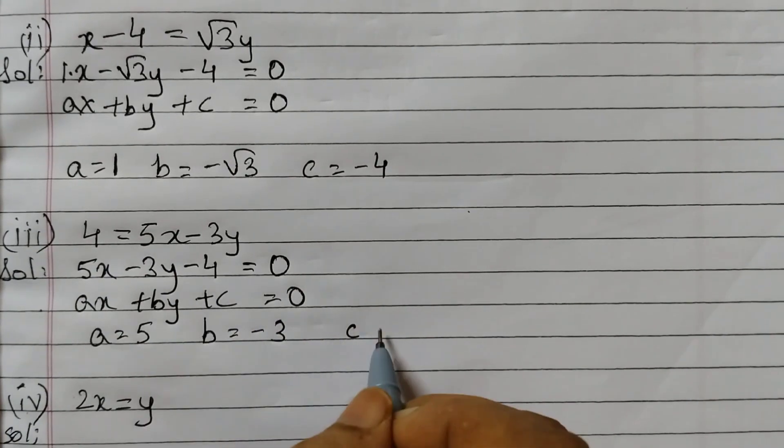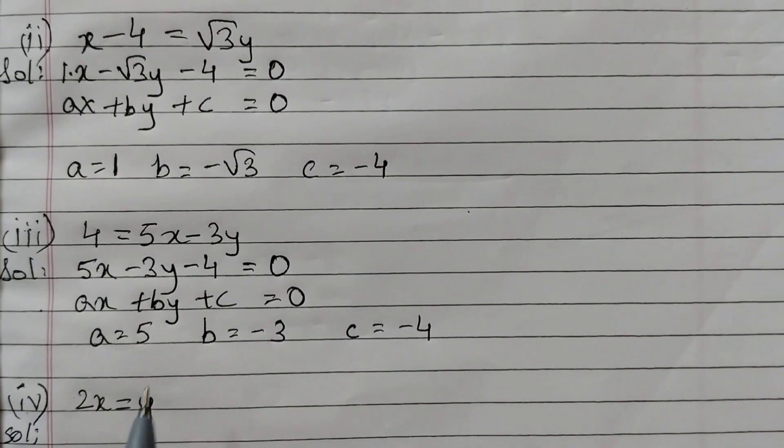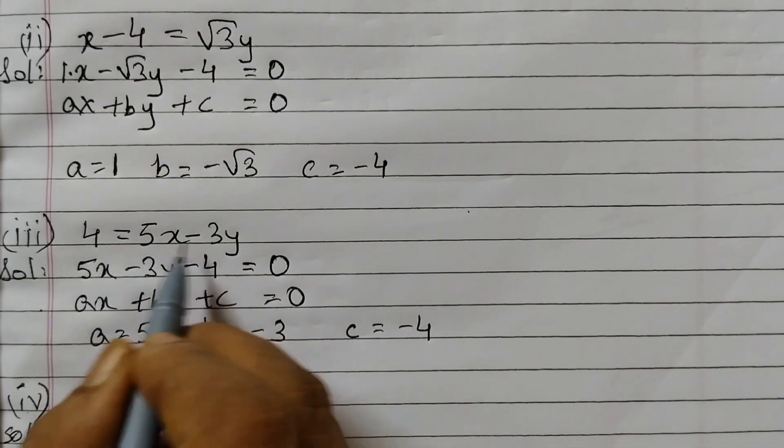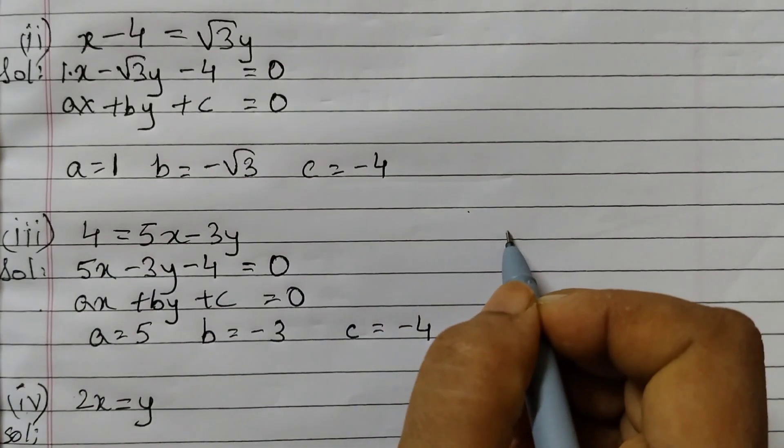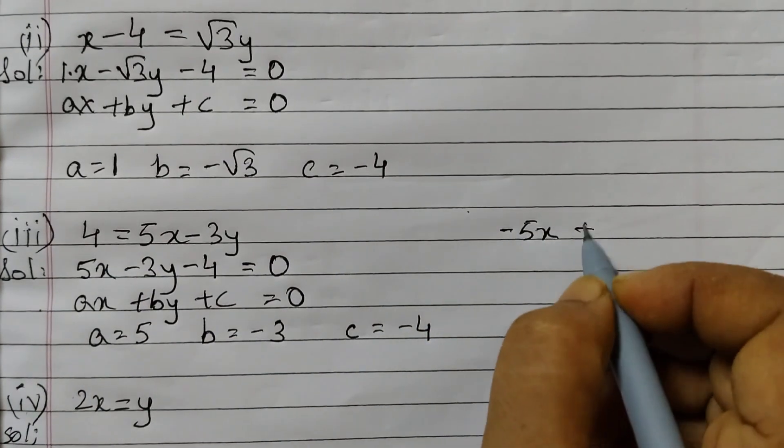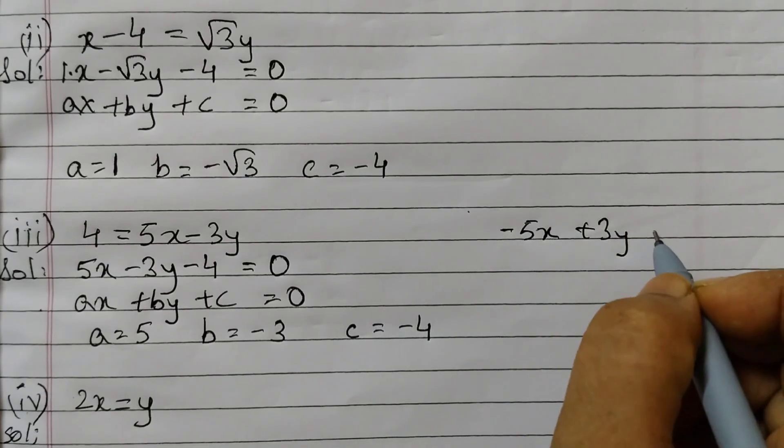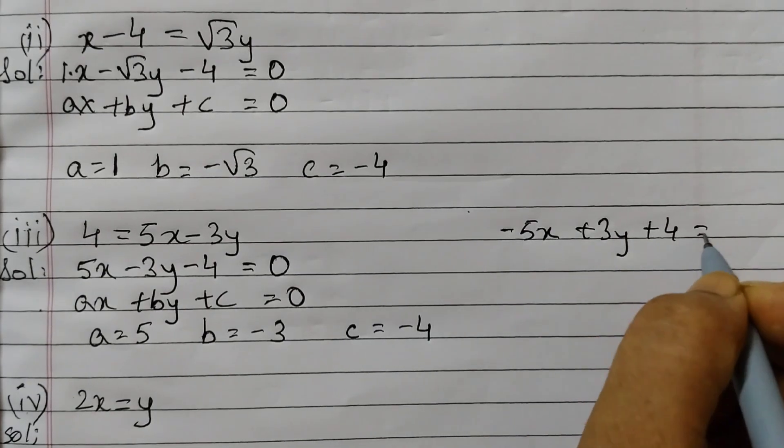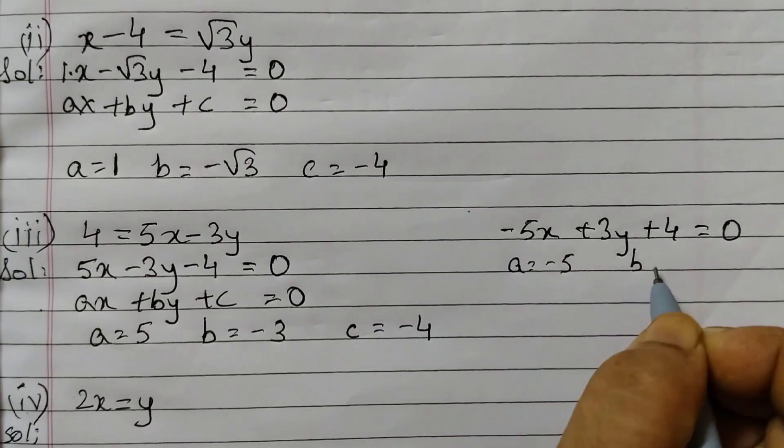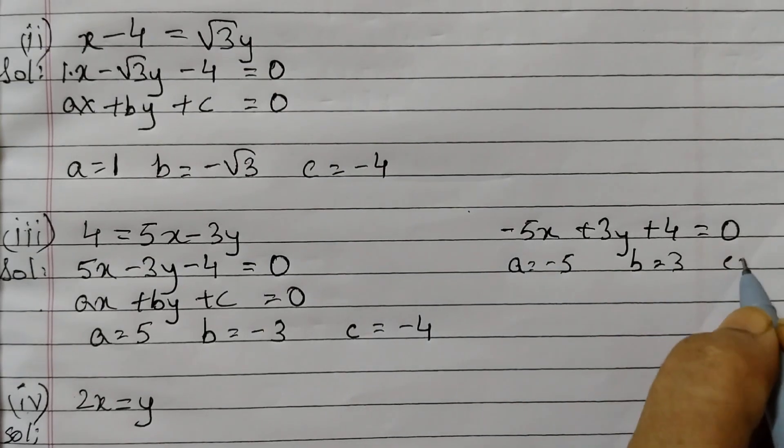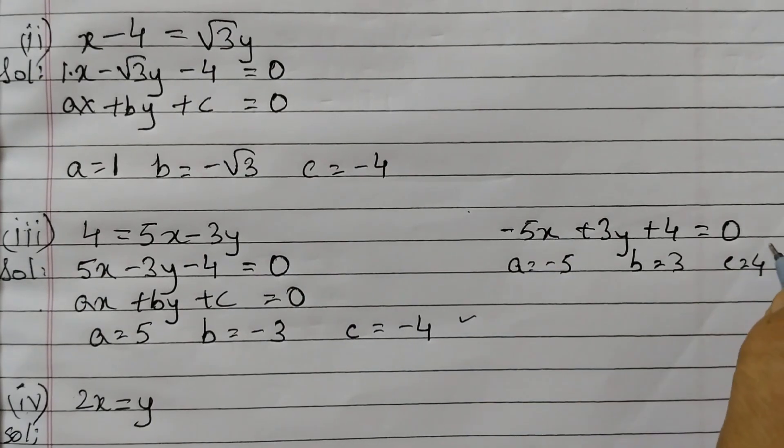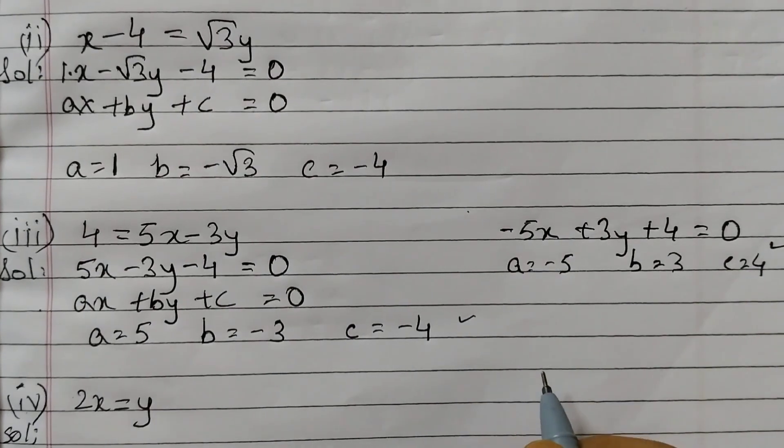If I would have done it the other way, that means get these two terms to this side, then this would be minus 5x plus 3y plus 4 equals to 0. So here in this case, a is minus 5, b is 3 and c is 4. So both the solutions are correct, this one as well as this one. Depends how you do it.